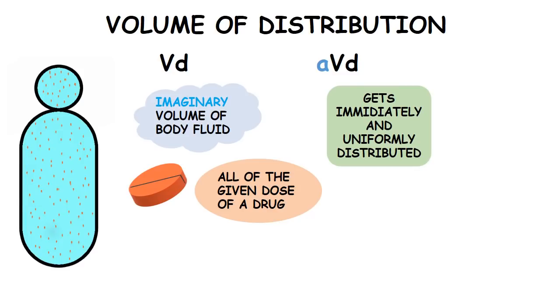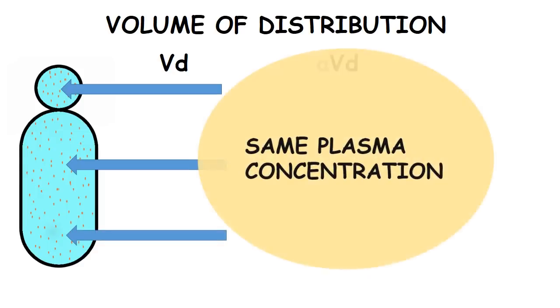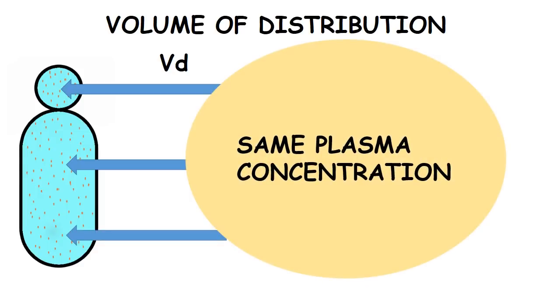So the important part to remember here is that the drug gets uniformly distributed, that means if we take a plasma sample from any part of the body, everywhere the concentration of the drug in the plasma will be just the same.